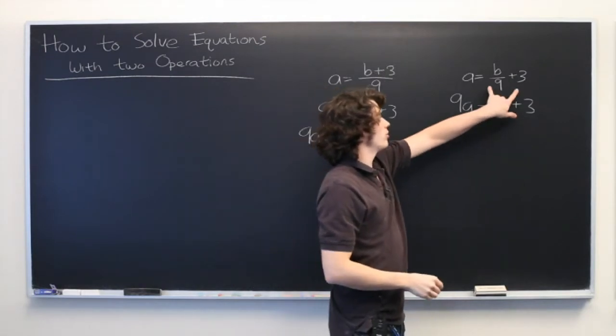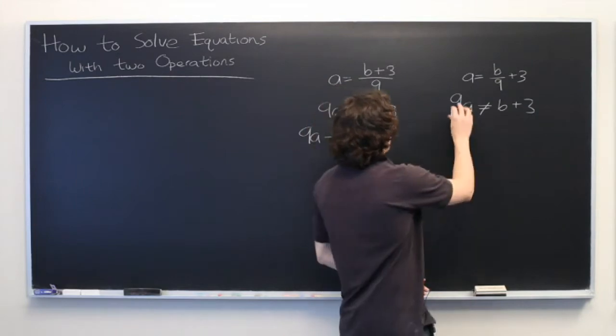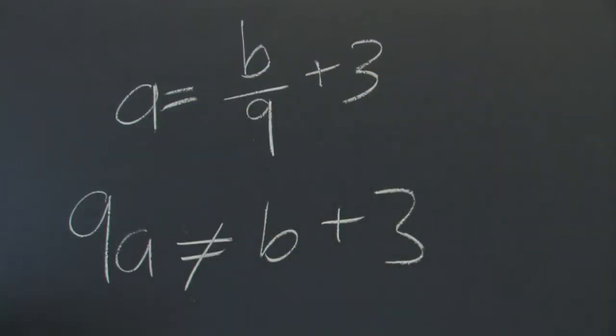Because when you have two terms that are separated by addition or subtraction, you need to multiply a coefficient by every term, not just the first one.